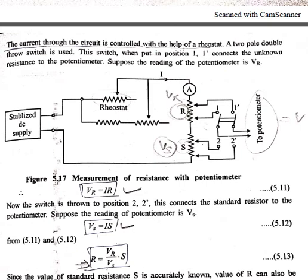Using equations 5.11 and 5.12, we get VR divided by VS equals R divided by S. Therefore, the unknown resistance R equals VR divided by VS, multiplied by S. Since the value of the standard resistance S is accurately known, the value of R can also be accurately determined.